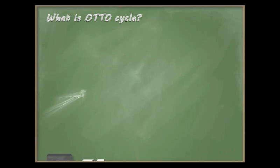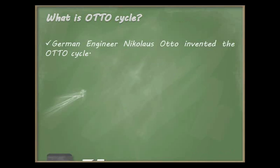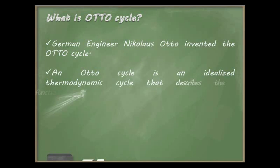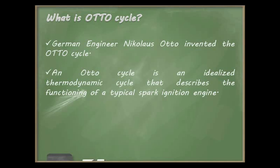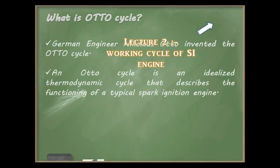Let us first discuss what is the Otto cycle. The Otto cycle was invented by a German engineer named Nicholas Otto. It is defined as an idealized thermodynamic cycle that describes the functioning of a typical spark ignition engine, which we studied in the previous lecture — Lecture 2: The Working Cycle of SI Engine.